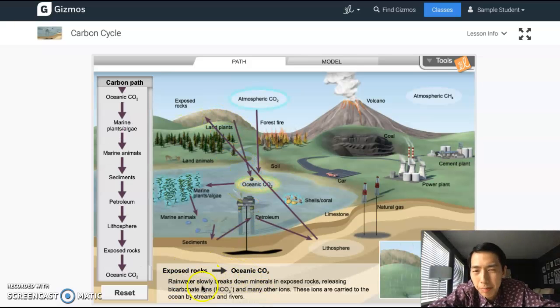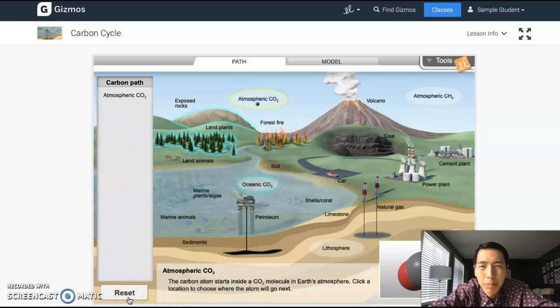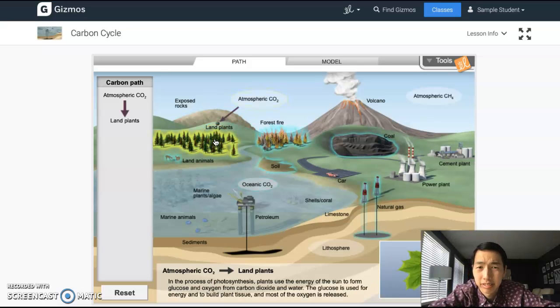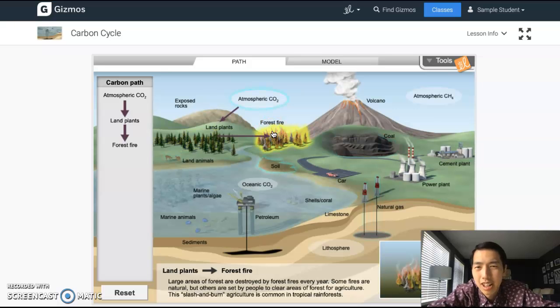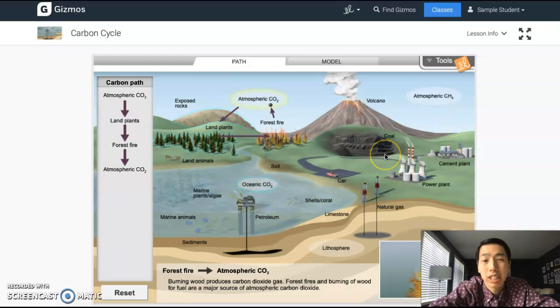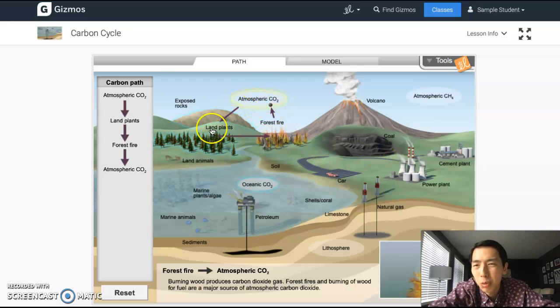And then the rocks, and I can just keep clicking and keep clicking and keep forming these cycles. Every step along the way, you get some information. Okay, I'm going to make one more. I can start at my atmospheric CO2, I can go to land plants, forest fire, and back up to the atmosphere. So that's a really short cycle. Okay, so sometimes you can click a whole bunch of things and make a really long carbon path, or you can make a really short one like I've just done here. It just went to three places.